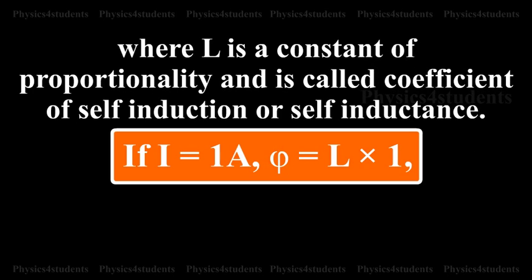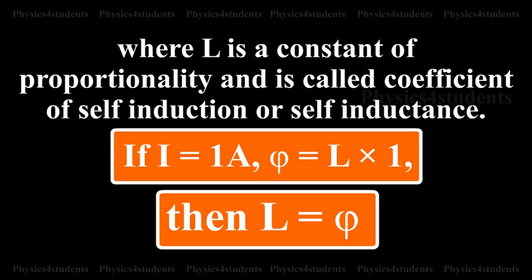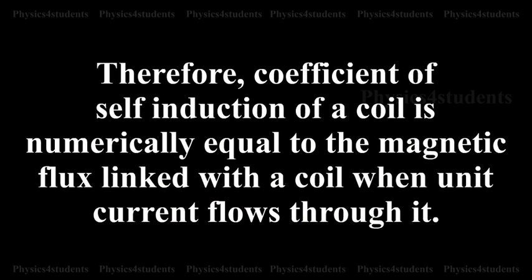If I equals 1A, phi equals L into 1, then L equals phi. Therefore, coefficient of self-induction of a coil is numerically equal to the magnetic flux linked with the coil when unit current flows through it.